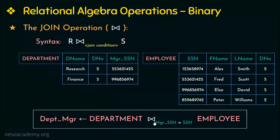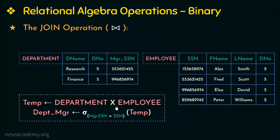This join operation is nothing but a Cartesian product followed by the selection operation. Instead of the join operation, I can specify the Cartesian product followed by the selection operation. First I do the Cartesian product of the department and employee relations and store the result in a relation called temp. Then from that result I select only those tuples where manager SSN is equal to SSN. Therefore a Cartesian product followed by a selection can be used instead of the join operator and gives the same result.